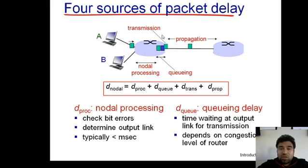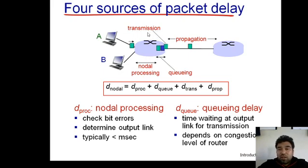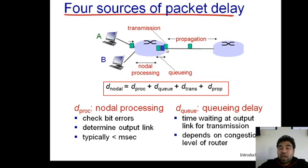Transmission delay is the time required by the router to push all the bits of a packet into the link. Propagation delay is the time required by a single bit of information to travel from one point to the other — from the source end of the link to the destination end.